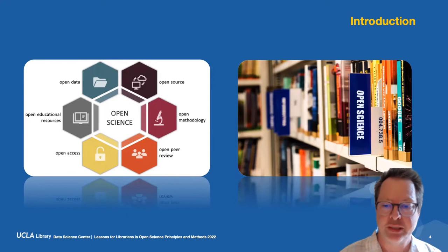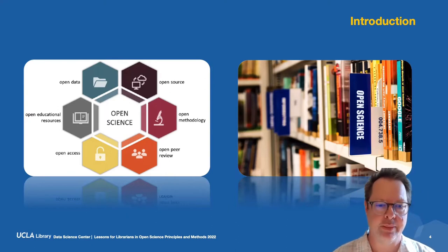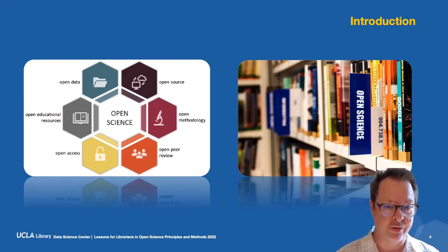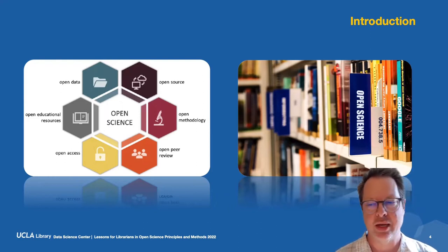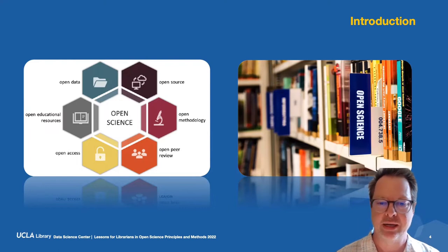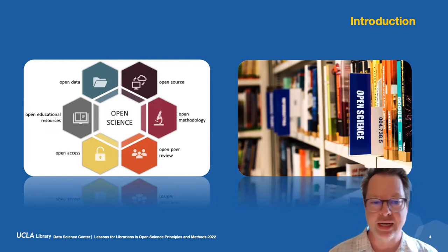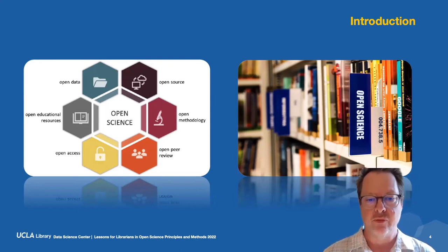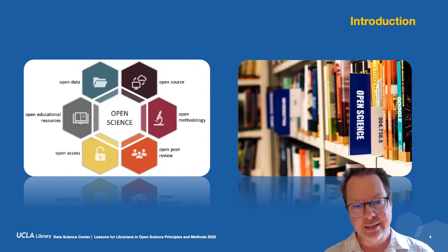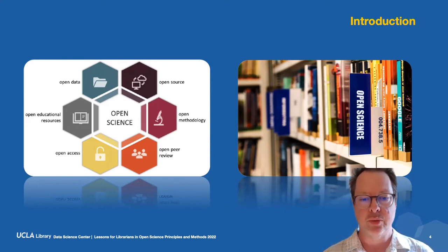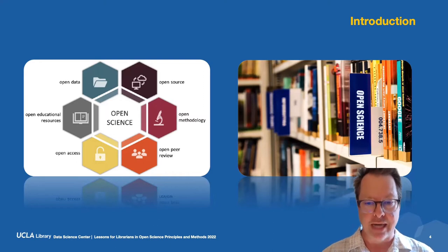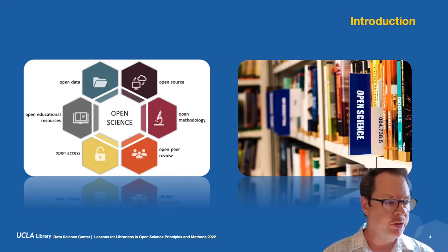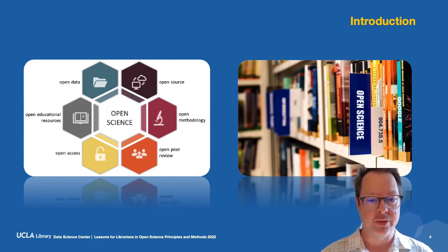UNESCO's recommendations on open science were recently unanimously adopted by all 193 UNESCO member states, which includes us, the US. UNESCO's National Academies of Science, Engineering, and Medicine developed a roundtable on aligning incentives for open science in 2019 and published a toolkit for fostering open science. NASA has also engaged in an initiative to transform to open science called NASA TOPS and designated 2023 as the year of open science.